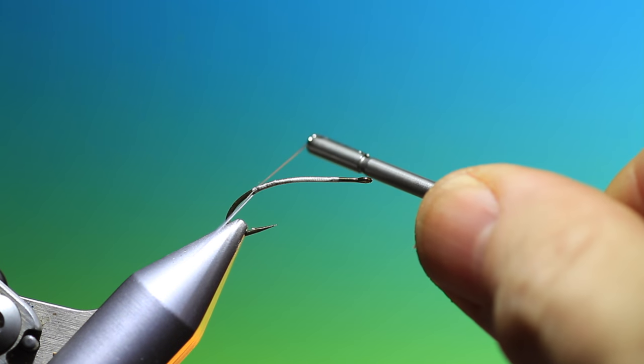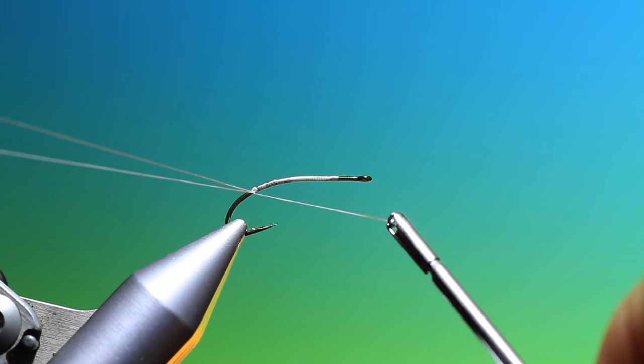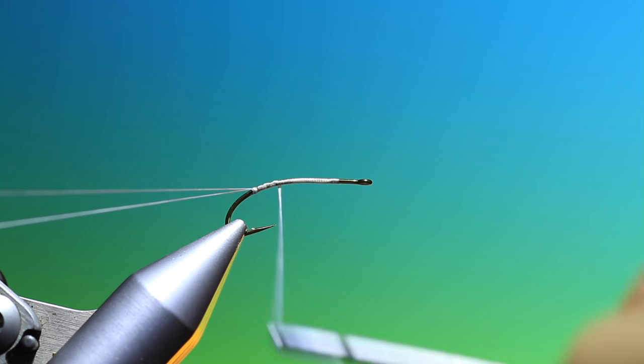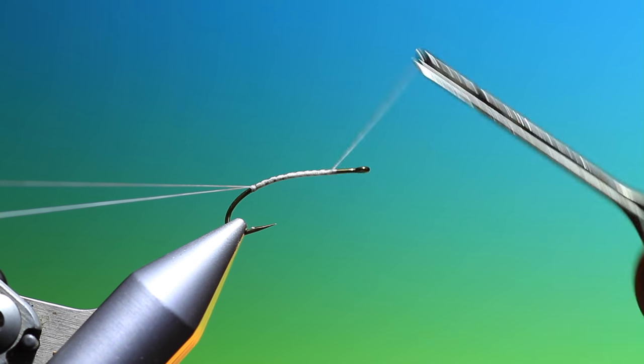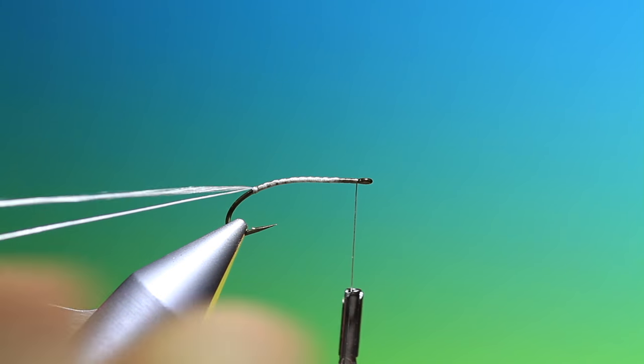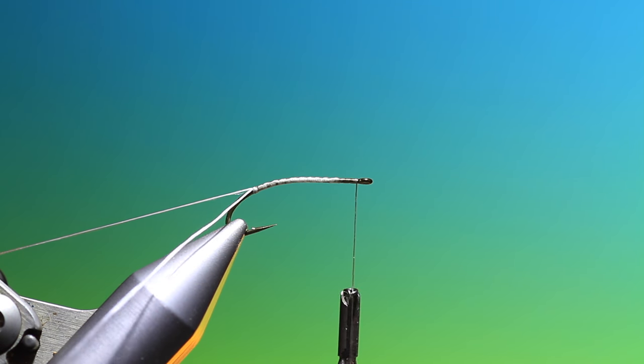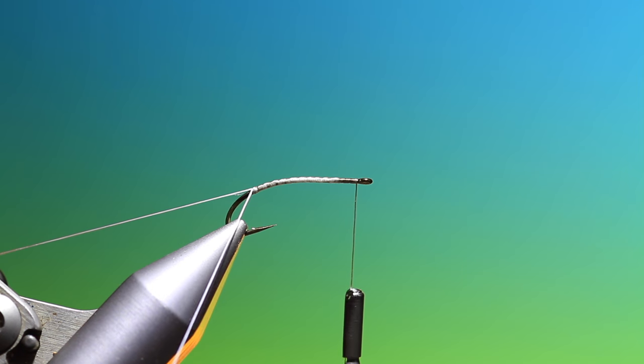So make a loop, make sure that the two ends of the loop are tight otherwise it won't hold the deer hair, move your tying thread forward. Get that out the way on your material clip if you have one on your vise and hang your dubbing spinner on there.